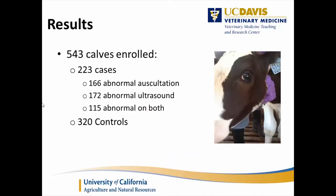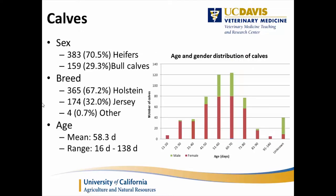We had 543 calves: 223 cases and 320 controls. Of the 223 cases, 166 were abnormal on auscultation and 172 abnormal on ultrasound, with 115 common to both. Gender-wise, because we were predominantly on dairies, we had 70% heifers and 30% bull calves. Breed-wise, about 67% Holsteins and 32% Jerseys, with a small fraction of other breeds.